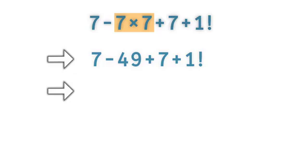Now we are left with minus and plus signs. Since both have the same priority, first we perform the operation that appears first when moving from left to right. So 7 minus 49 gives minus 42.